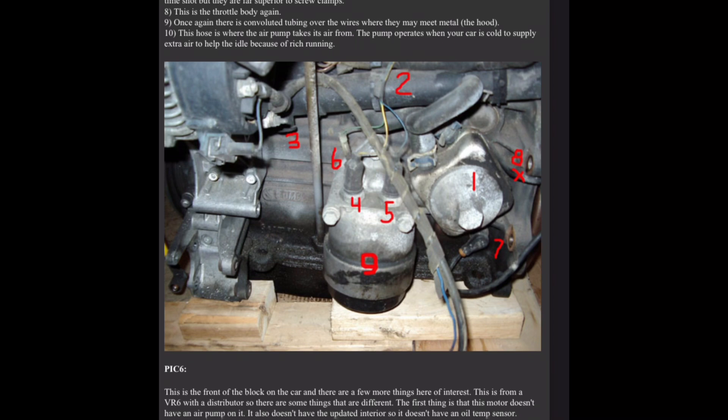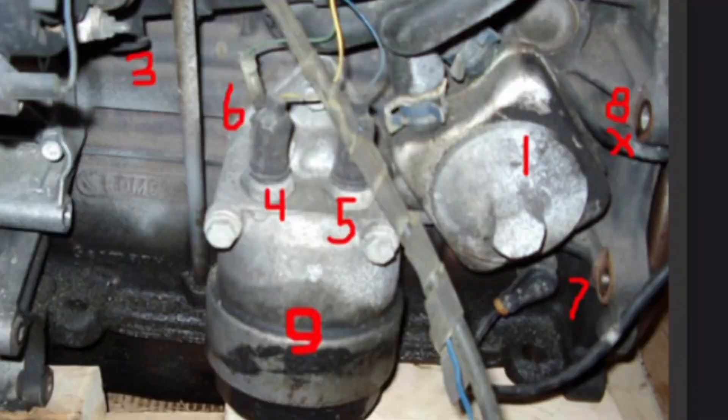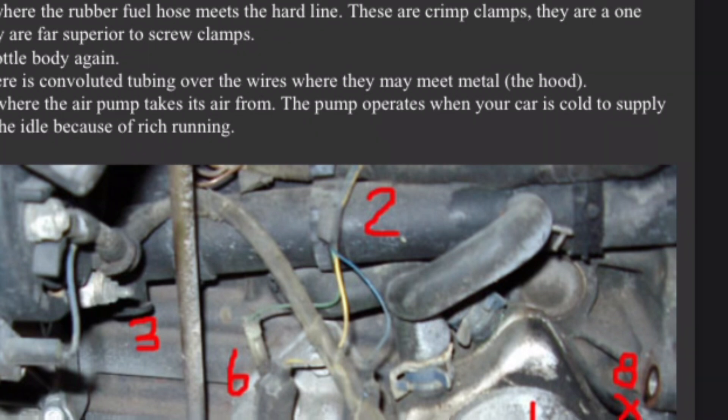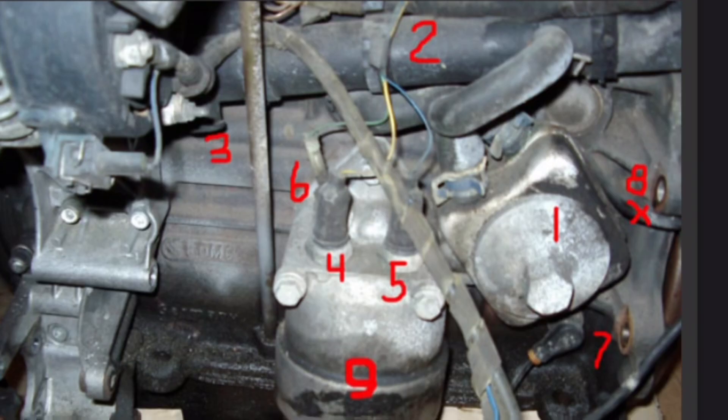This is the front of the block on the car and there are a few more things here of interest. This is from a VR6 with a distributor so there are some things that are different. The first thing is that this motor doesn't have an air pump on it. It also doesn't have the updated interior so it doesn't have an oil temp sensor. One, this is the oil cooler for the motor. There is a seal on the front that can be replaced if you have any problems with leaks. Two, this is the coolant crossover pipe that goes from the water pump to the thermostat housing. The pipe gets really brittle once it gets old so you may have problems with that breaking if you try to remove the coolant hoses going to the oil cooler.